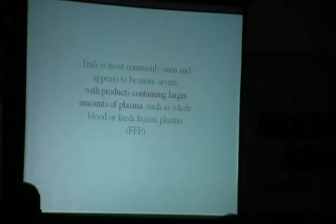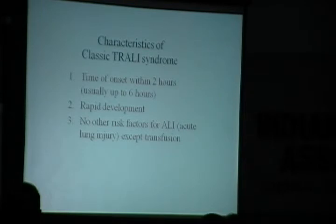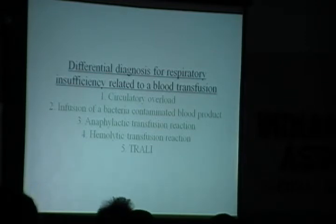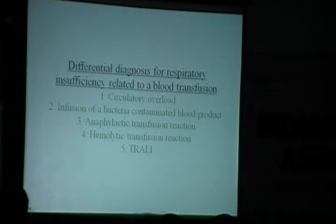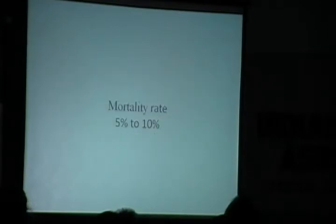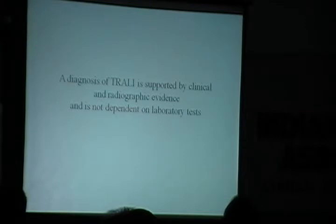TRALI is most commonly seen and appears to be more severe with products containing large amounts of plasma, such as whole blood and fresh frozen plasma. That is why we try to give packed red blood cells where possible — to remove the plasma and reduce the antibody load. The key diagnostic criterion is that there should be no other risk factors for acute lung injury. The patient should not have any other comorbid condition such as cardiac injury or other problems causing respiratory compromise. The mortality rate is reported to be around 20–30%.